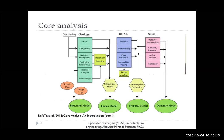Generally, core analysis can be divided into three categories: geology, RCAL, and SCAL. The main objective of a geological study is to build a structural model. The objective for RCAL studies is to build a property model, and for SCAL, the objective is building both a property model and a dynamic model. By RCAL, we mean properties such as porosity, permeability, water saturation, and gamma ray. By SCAL, we mean properties such as fluid mobility, capillary pressure, and wettability.